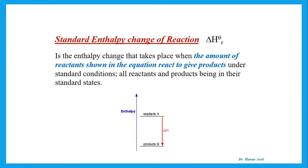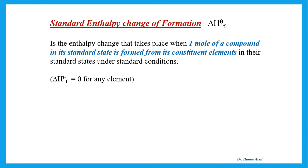We have different Delta H's, and you should know the definition of each standard enthalpy change. Standard enthalpy change of reaction is the enthalpy change that takes place when the amount of reactants shown in the equation react to give products under standard conditions, with reactants and products in their standard state. Standard enthalpy change of formation is the enthalpy change that takes place when one mole of a compound in its standard state is formed from its constituent elements in their standard states under standard conditions. Remember that Delta H formation of any element is zero.